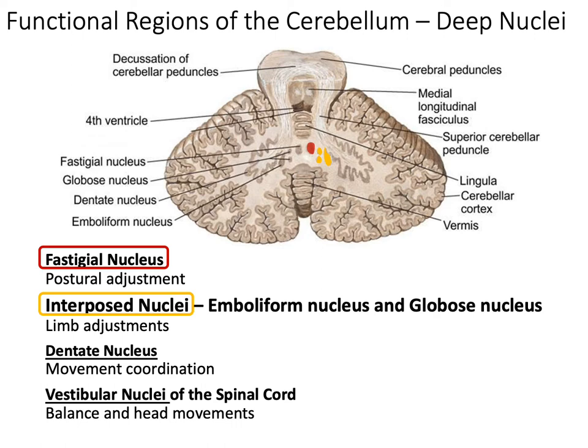Lateral to that, in yellow, you have the interposed nuclei. Just like the intermediate region, it's associated with limb adjustments. Now there are two types of interposed nuclei — emboliform and globus — however, you do not need to know that for your exam. Just simply know it as interposed nuclei.